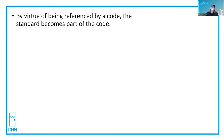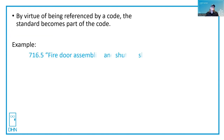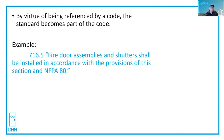By virtue of being referenced by the code, the standard then becomes part of the code. For example, in the International Building Code, Chapter 7, section 716.5 says fire door assemblies and shutters shall be installed in accordance with the provisions of this section and NFPA 80.